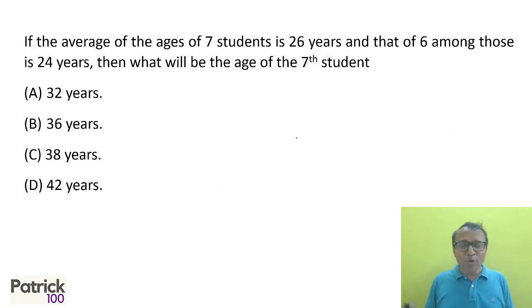It is actually a simple sum, but I wanted to introduce a technique which is there: around the average, total is 0. So when you say average is 26, and 6 people are minus 2 (24 is minus 2), 6 people total is minus 12. So the last person has to be plus 12. So it automatically becomes 38: 26 plus 12 equals 38. That's the answer.